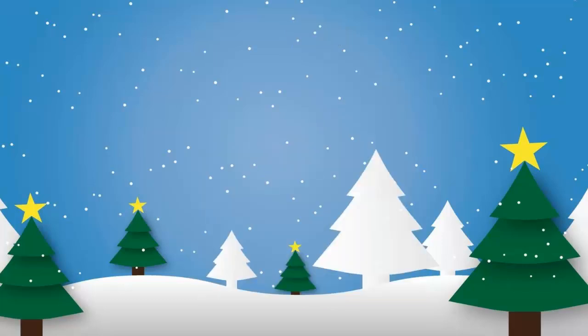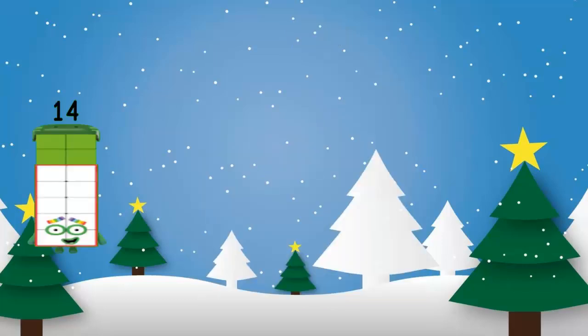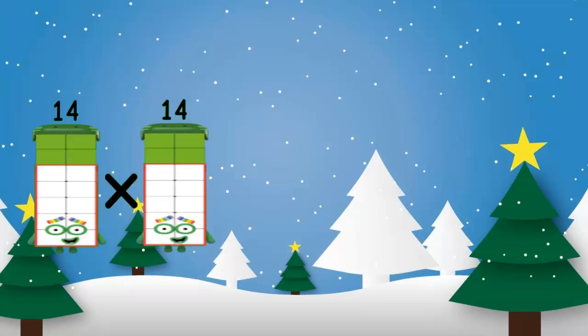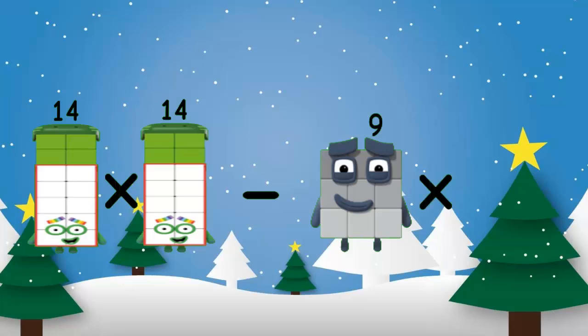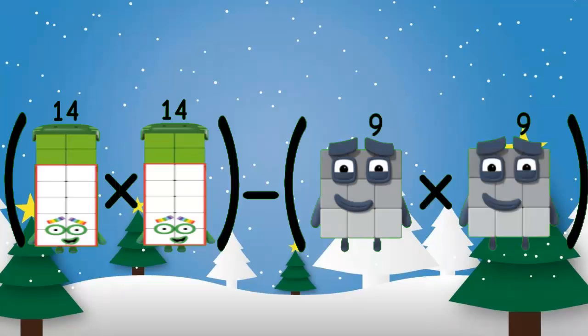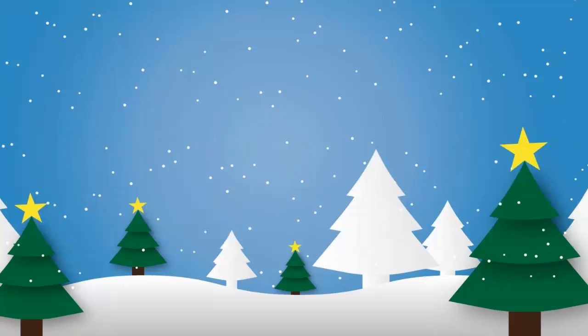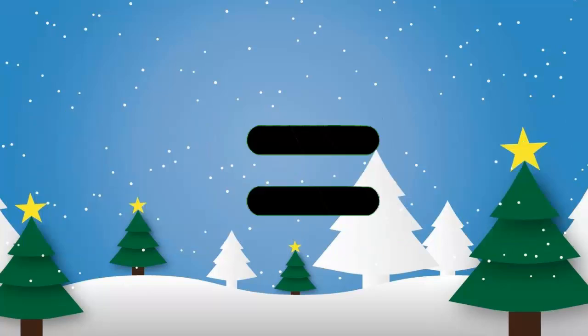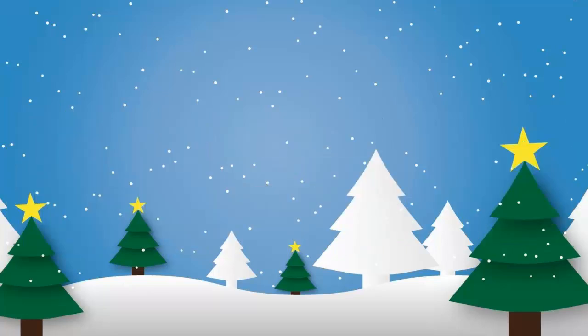You guys finish quickly. 14 multiplication 14 minus 9 multiplication 9, open bracket, equal to 115.